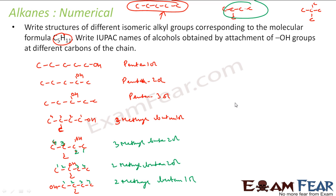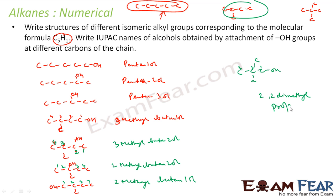Now let's take the third isomer — the fully branched scenario with 3 carbons in the main chain and two methyl branches at C2. No matter where you attach the OH group here, it is all symmetrical, so you get only one possible alcohol: 2,2-dimethylpropan-1-ol. In total, I got 3 possible structures for straight pentane, 4 for the first branched isomer, and 1 for this scenario — giving 8 possible structures overall.